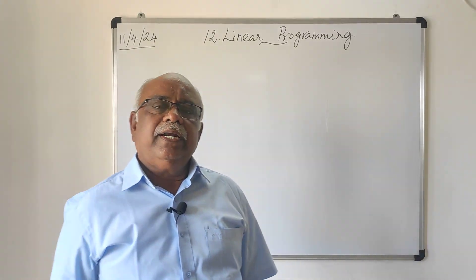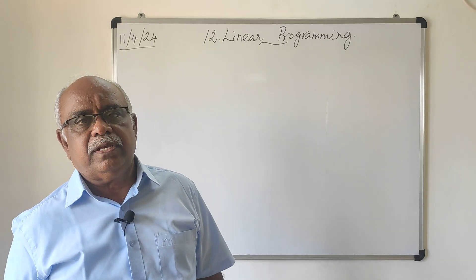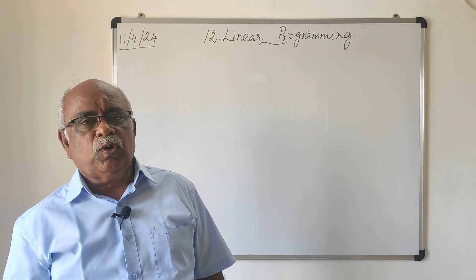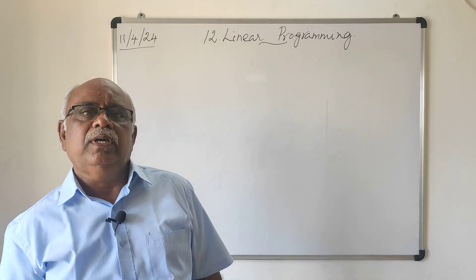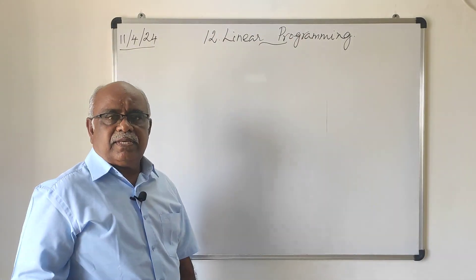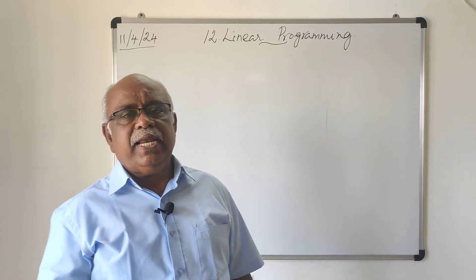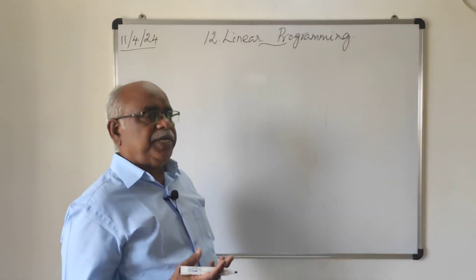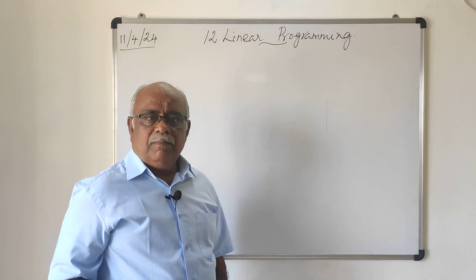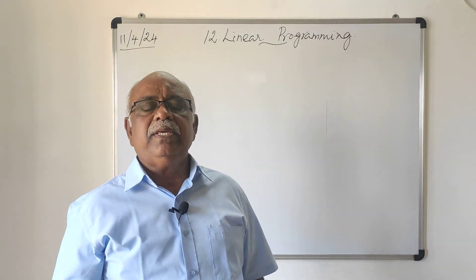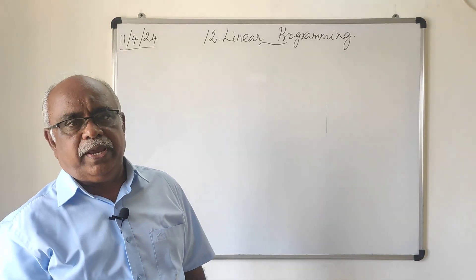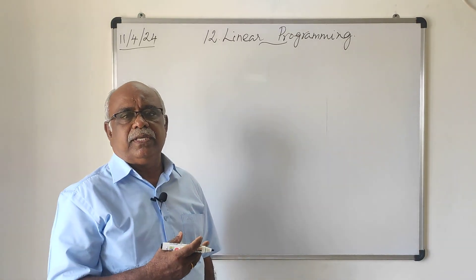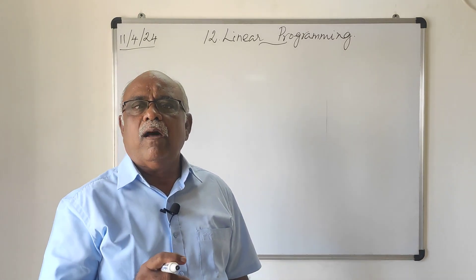In your 11th standard, you have studied linear inequalities and the system of linear inequalities in two variables, and the solution of those inequalities was graphically solved. Now in this chapter, in 12th standard, we shall apply the linear inequalities to solve some real-life problems. And those problems are called optimization problems. A problem which seeks to maximize or minimize a linear function of two variables x and y, subject to certain constraints as determined by the linear inequalities, is called an optimization problem.